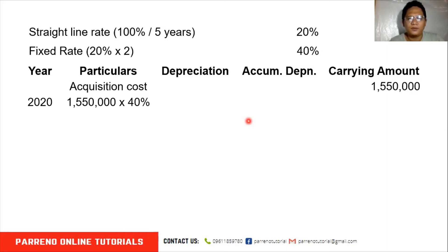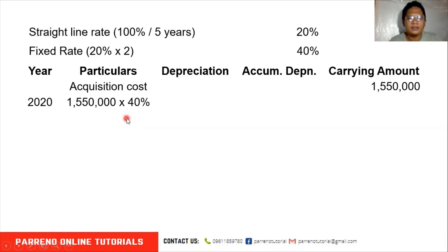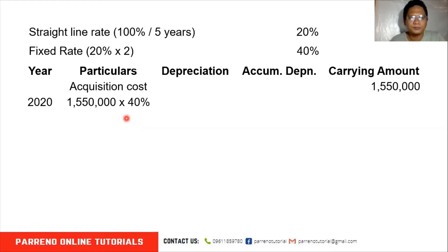If you observe, in 2020 our depreciable base is the cost — the total purchase price — and not the depreciable cost (which is cost less salvage value). That's one key difference of the double declining balance versus the straight-line method, output method, and the sum-of-years' digits method we previously discussed.